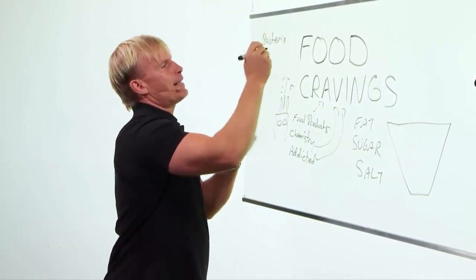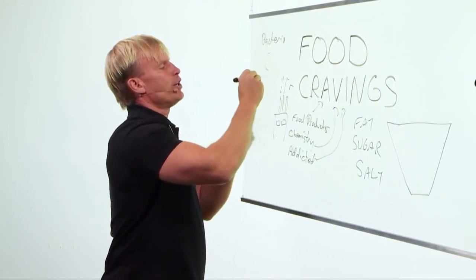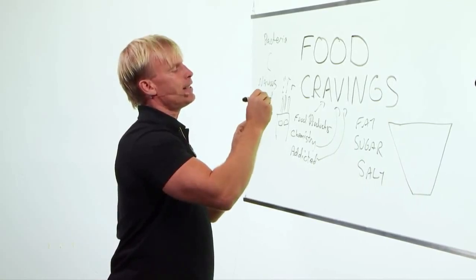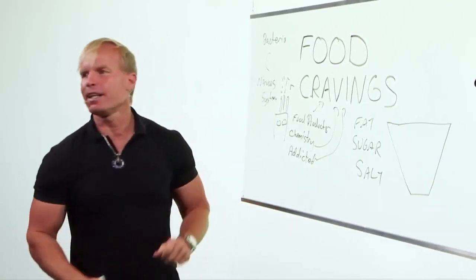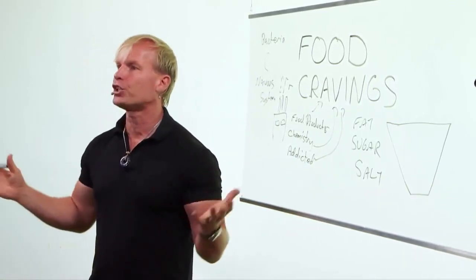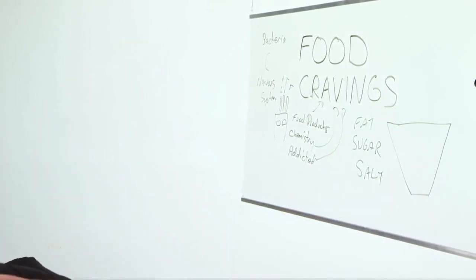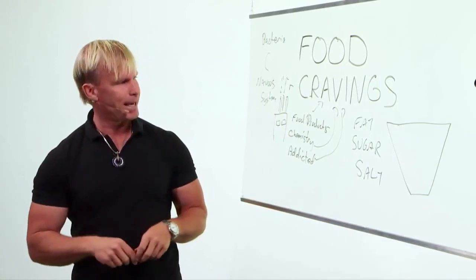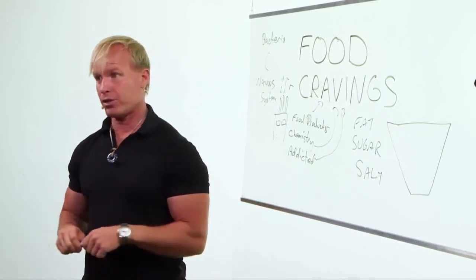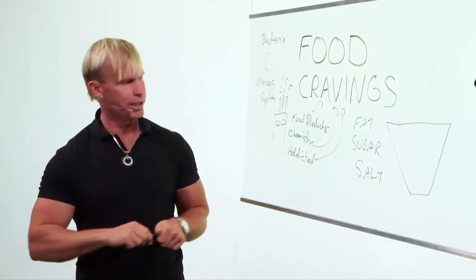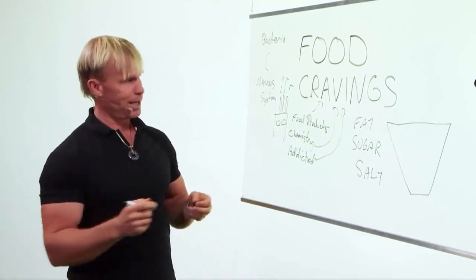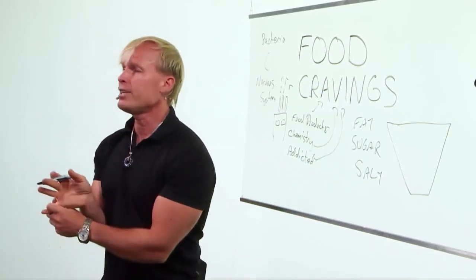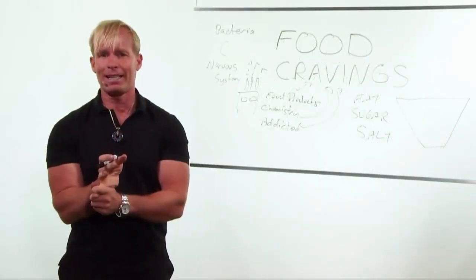Bad bacteria - what they do is they hook into your nervous system and they basically start telling your brain that you're hungry so they can get more sugar, more fat, or more salt. And it's not like the salt that we naturally got back in the old days. This is salt that is thousands of times more than we need.